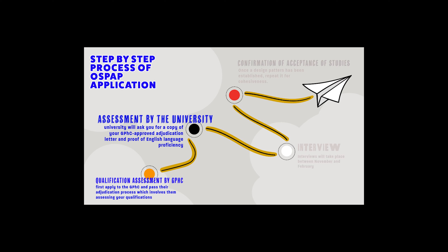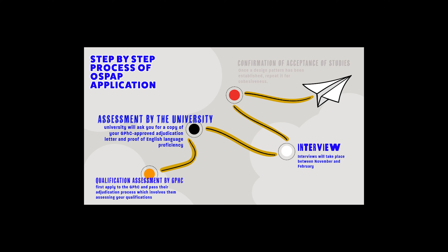As part of the university application, you will need to send a copy of your GPhC-approved education letter and proof of English language proficiency such as an IELTS score. Once an offer is made, the university will ask for a good standing certificate from your home country. All offers are subject to interview, which usually takes place around November and February.